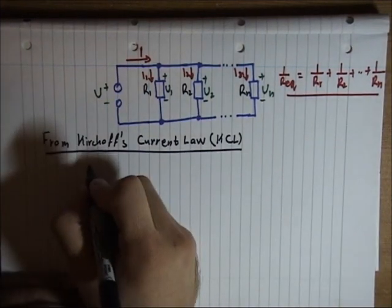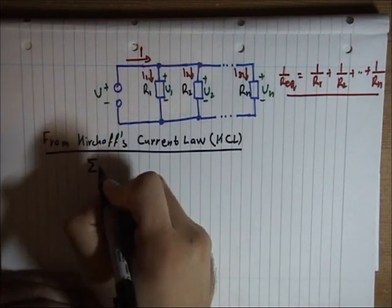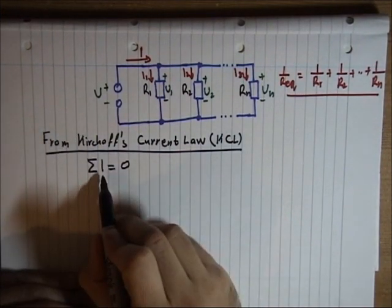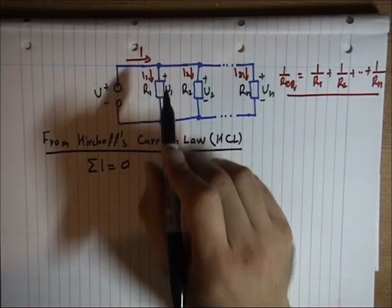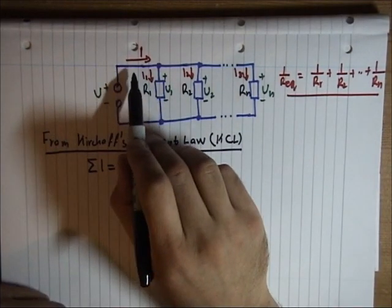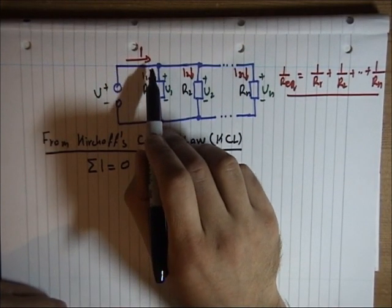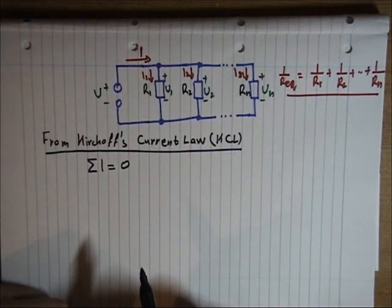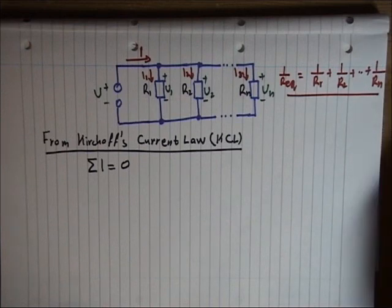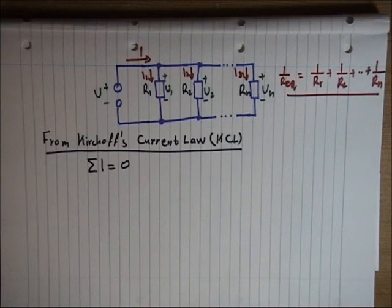Mathematically, this law is this one. The sum of the currents at one point is equal to zero. Effectively, all the currents that enter into that point are positive and the currents exiting that point are considered negative.